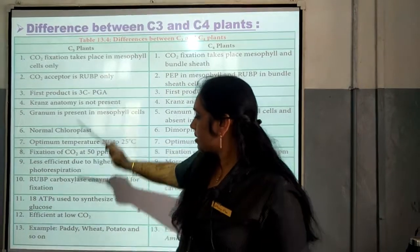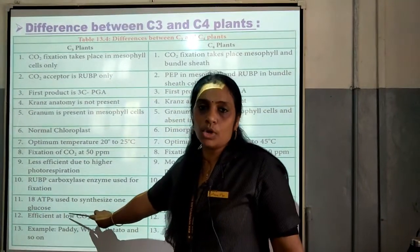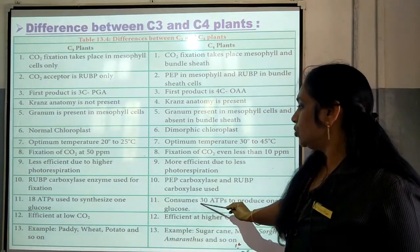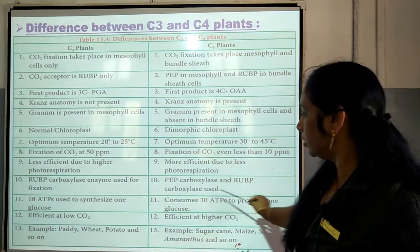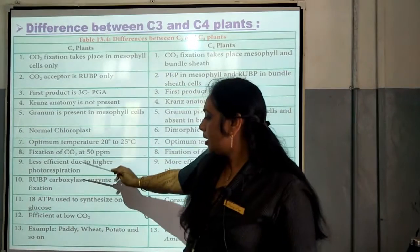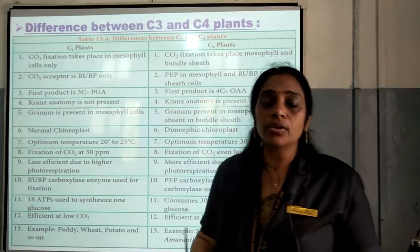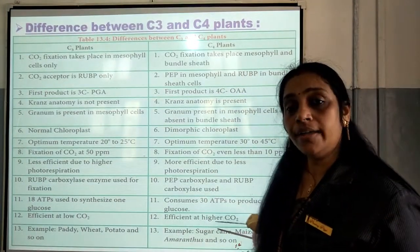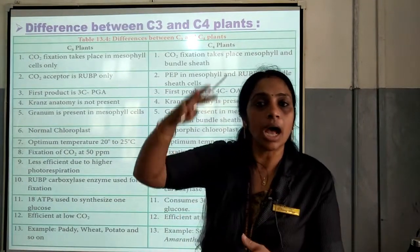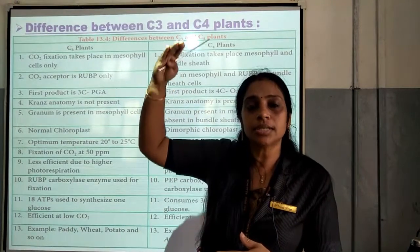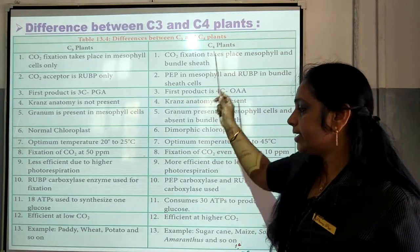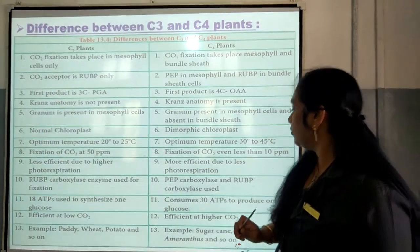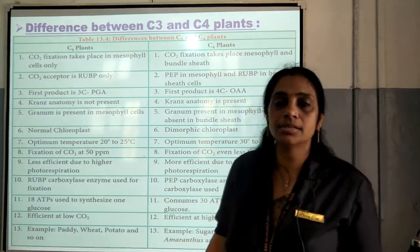In the case of C3 plants, 18 ATP are used for the synthesis of one glucose molecule. In the case of C4 plant, 30 ATP are consumed for the production of one glucose. In C3 plant, it is efficient at low carbon dioxide — if the availability of carbon dioxide is low, C3 cycle will still take place. But in the case of C4 plant, it is efficient at higher CO2 — when carbon dioxide concentration is higher, then only C4 cycle is taking place. The examples for C3 plants are paddy, wheat, potato, etc. In the case of C4 plants, the examples are sugarcane, maize, sorghum, amaranthus, etc.